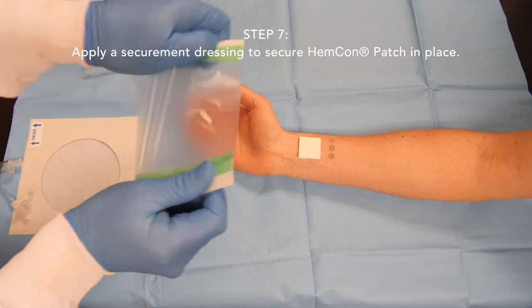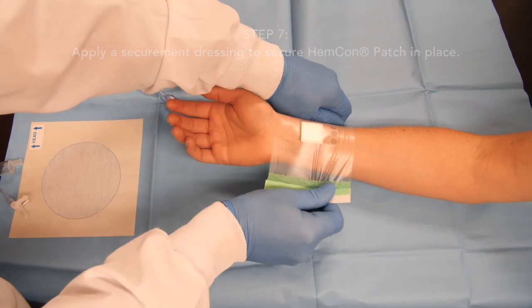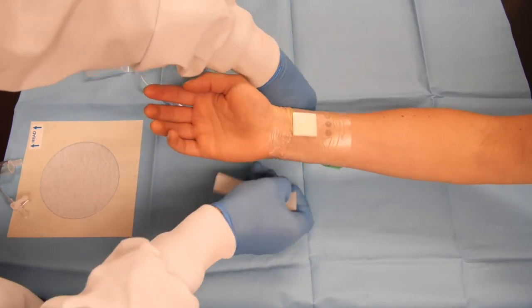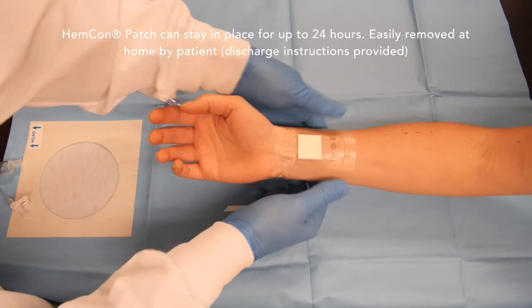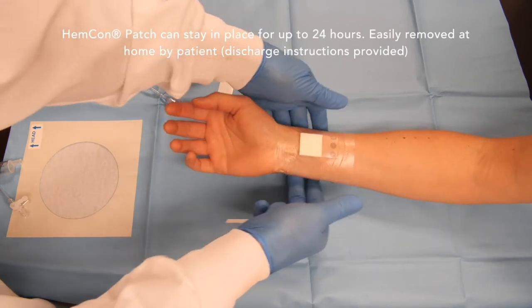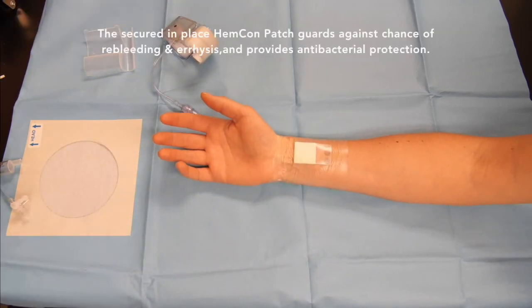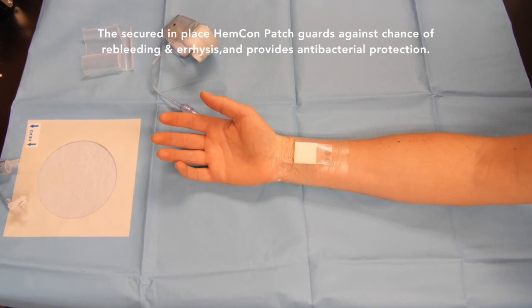Apply a securement dressing to secure the HemCon patch in place. The HemCon patch is recommended to remain secured in place for an additional 24 hours protecting the wound. The secured in place HemCon patch guards against chance of rebleeding, thrombosis, and provides antibacterial protection.